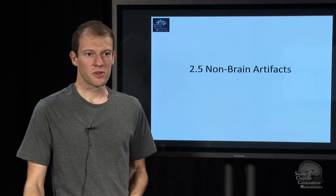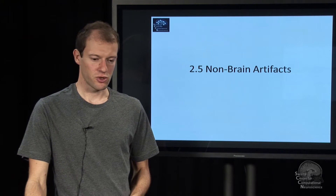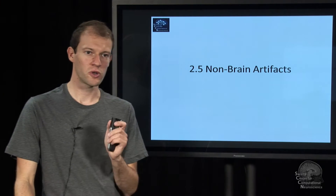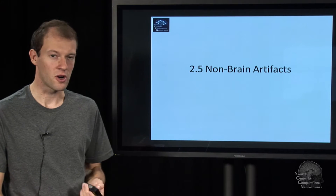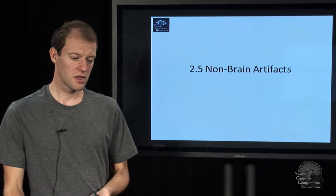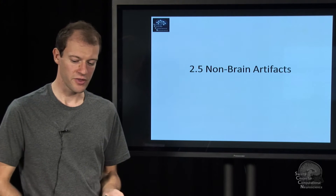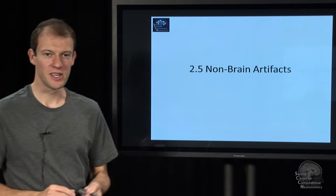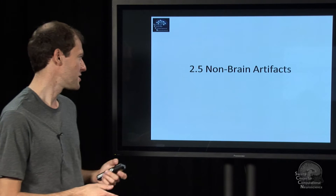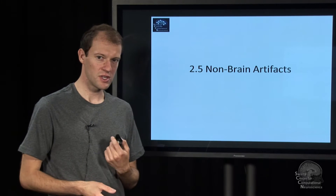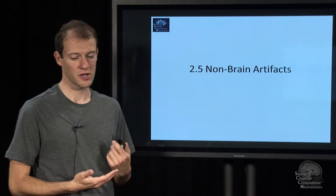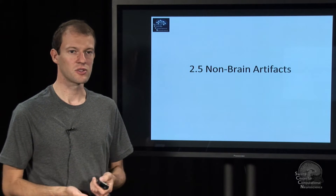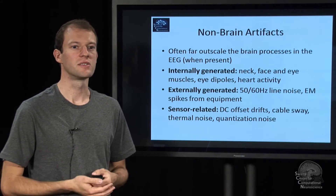The next — the second to last module of this lecture is rather short. We're talking about artifacts, which is anything that's artificially introduced into the EEG generated from muscles and so on — anything that's not brain signals.